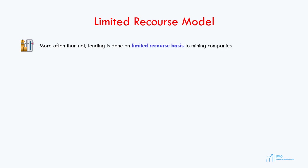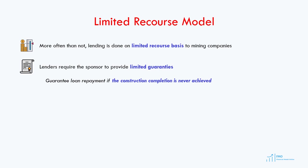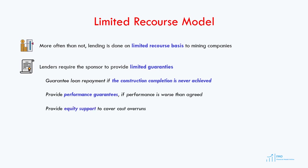However, more often than not in the mining industry, the lending is done on a limited recourse basis. The lender will require the sponsor to provide limited guarantees. First, the sponsor will have to provide a construction completion guarantee — for example, if construction completion is never achieved, the sponsor will have to repay the loan. Next, the sponsors will have to provide performance guarantees if the performance of the project is worse than expected, such as lower metal recovery or ore grade. If the revenue is affected materially, the lender may require the sponsor to repay part of the loan. The sponsor is also required to provide equity support for any cost overruns, so if construction costs exceed what was agreed upon, the sponsor will have to inject more capital. Essentially, the lenders will have full recourse to the sponsor during the construction phase.